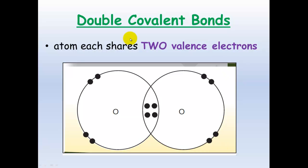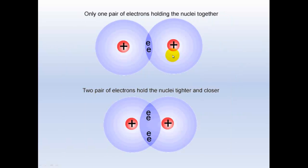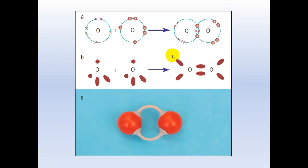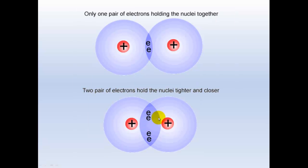Double covalent bonds form when each atom shares two valence electrons. You can see here that these electrons will make these atoms closer to one another. This is because the two pairs of electrons form a stronger electrostatic attraction, which brings those atoms closer together, as you can see in this example.